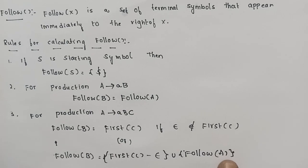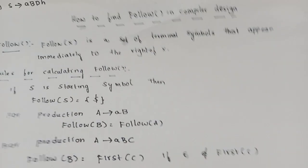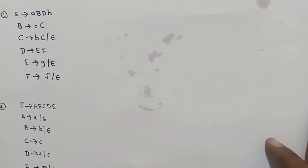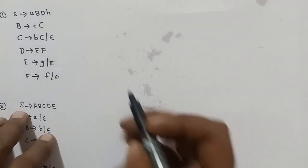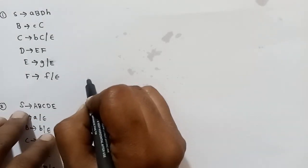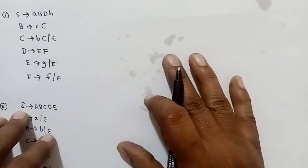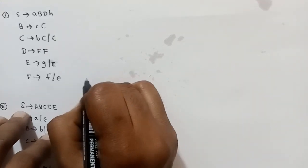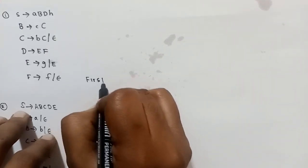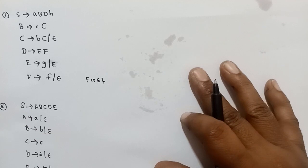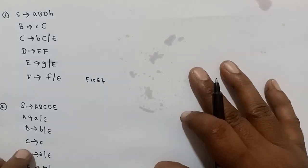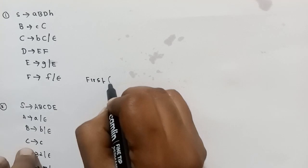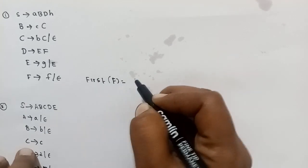So, as in previous FIRST examples, for FOLLOW calculation, FIRST must be calculated first — it is compulsory. For this particular example set of productions, let us first calculate FIRST. So, FIRST of F is calculated last.